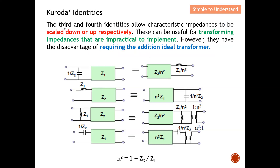The third and fourth identities allow the characteristic impedance to be scaled down or up respectively. This can be useful for transforming impedances that are impractical to implement — some impedances may be too large or too small, and we can use the third and fourth Kuroda identities to handle them. However, they have the disadvantage of requiring an additional ideal transformer, which will increase the cost of implementation.